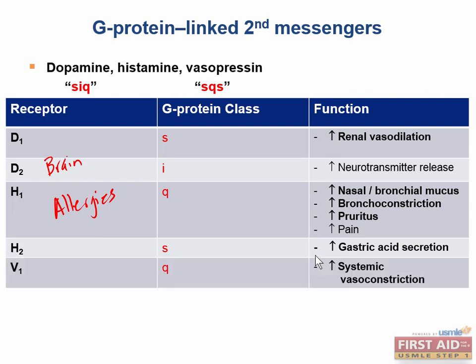We also have V1 receptors, which are of the G-sub-Q class, and they increase vascular smooth muscle contractions within the body. Since vasopressin stimulates V1 receptors, and the name vasopressin gives a clue to its function, vasopressin is going to vasoconstrict.